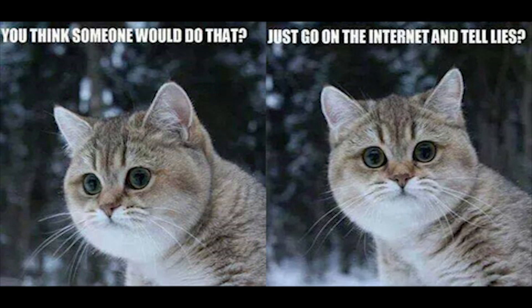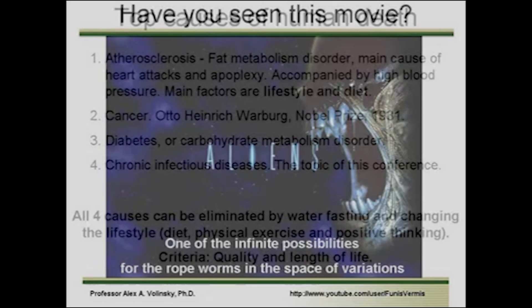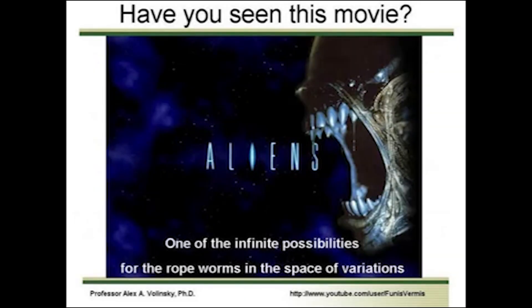I have to end it here for the sake of time. I did still want to take a look at the latest DNA results he mentioned in the intro, but I couldn't find it anywhere in the talk — that's a real shame. This talk only gets crazier from here: Walensky mentions a 'space of variations' and asks whether you've seen the movie Aliens, calling it 'one of the plausible explanations in the infinite number of possibilities for the ropeworms.'